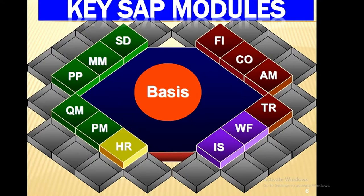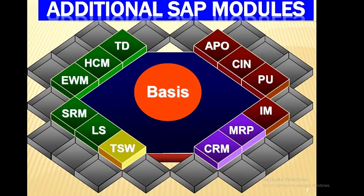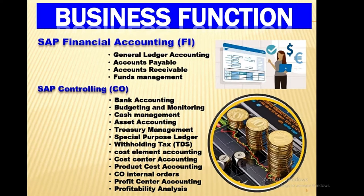Key SAP modules include: FI (Financial Accounting), CO (Controlling), AM (Asset Management), TR (Treasury), WF (Workflow), MM (Materials Management), HR (Human Resources), SD (Sales and Distribution), PP (Production Planning), QM (Quality Management), PM (Plant Maintenance), and BASIS. Additional SAP modules include APO, IM, MRP, CRM, HCM, TSW, EWM, SRM, and LS.